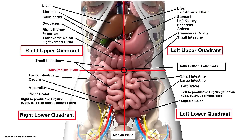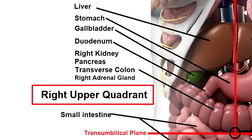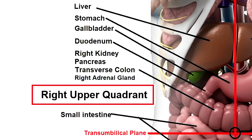Now, let's take a look at some of the major organs in the four quadrants. In the right upper quadrant, we see the liver, the stomach, the gallbladder, the duodenum, the right kidney, the pancreas, and the right adrenal gland.